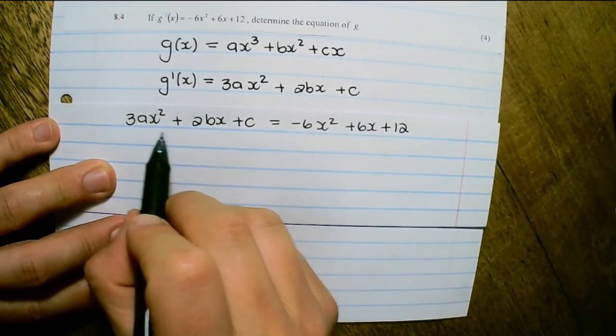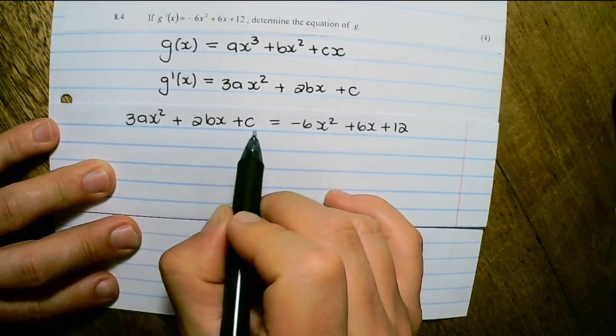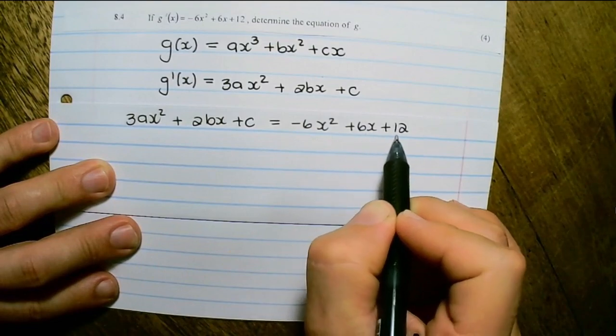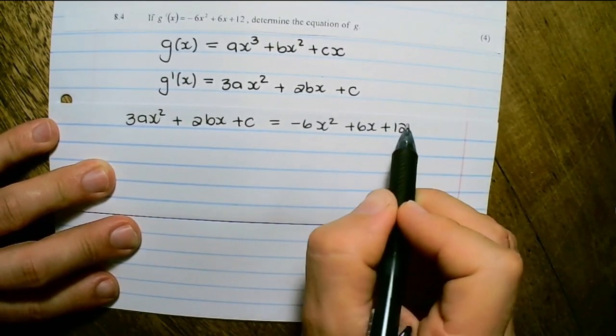And this will be equal to the first derivative that was given. So 3ax squared plus 2bx plus c equals negative 6x squared plus 6x plus 12, the first derivative that was given.